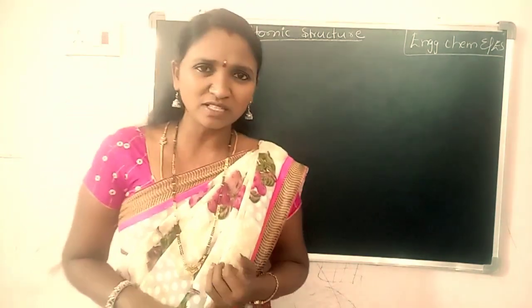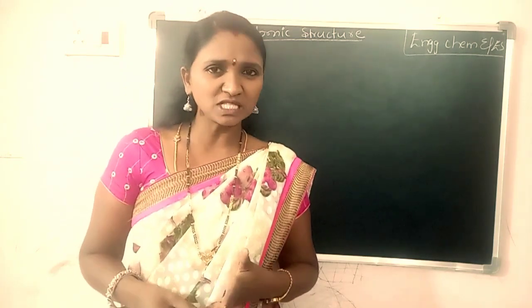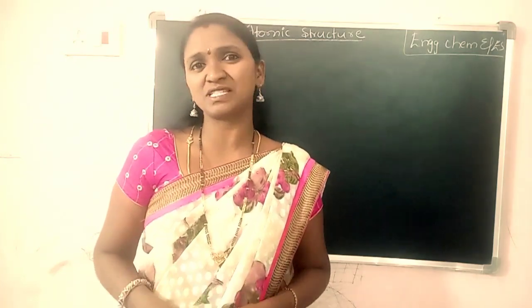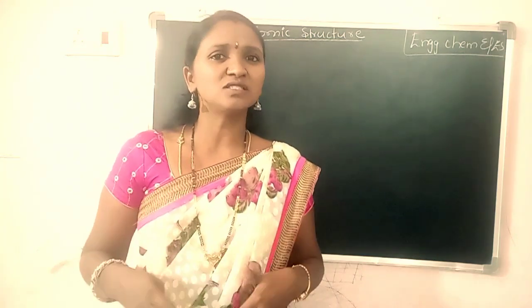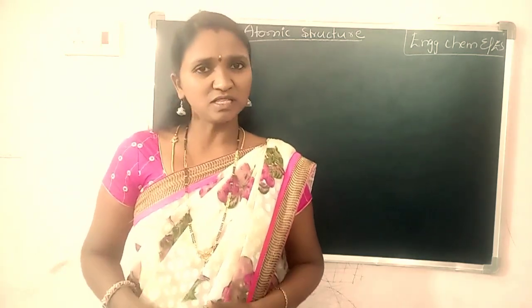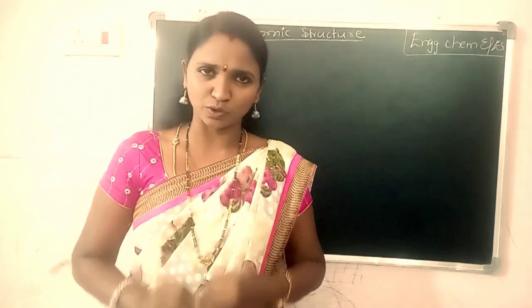Let us see what Pauli's Exclusion Principle is. This principle is about how the arrangement of electrons takes place into the orbitals. There are three important principles: the first one is the Aufbau Principle, second one is Hund's rule, and third one is Pauli's Exclusion Principle.